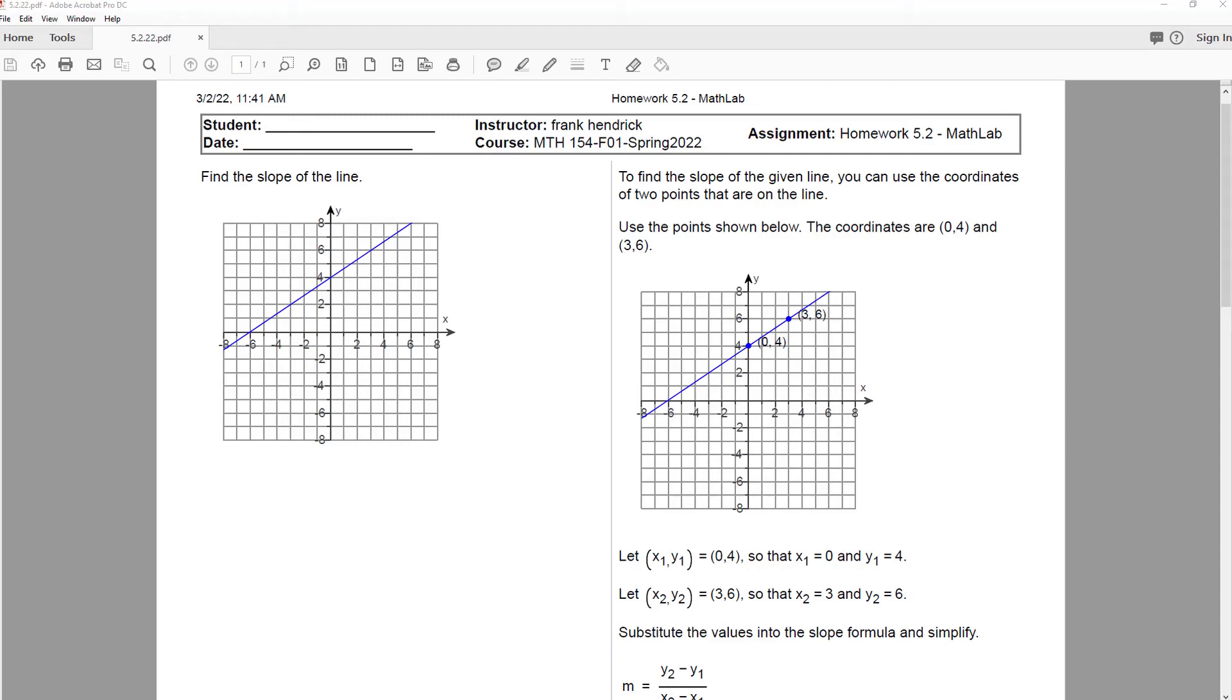Now this problem asks us to find the slope of the line. To find the slope of the given line, you can use the coordinates of two points that are on the line.